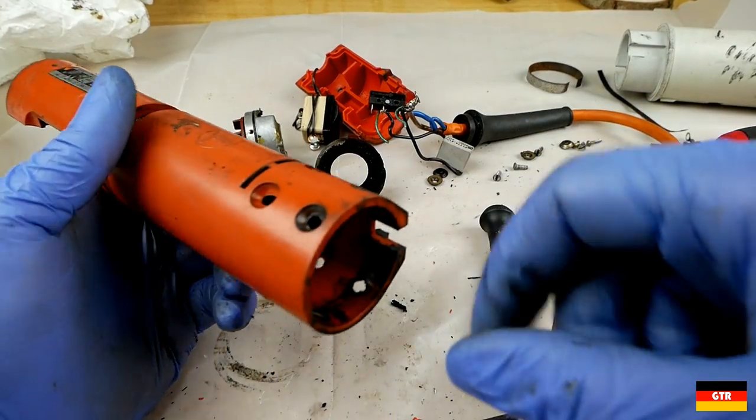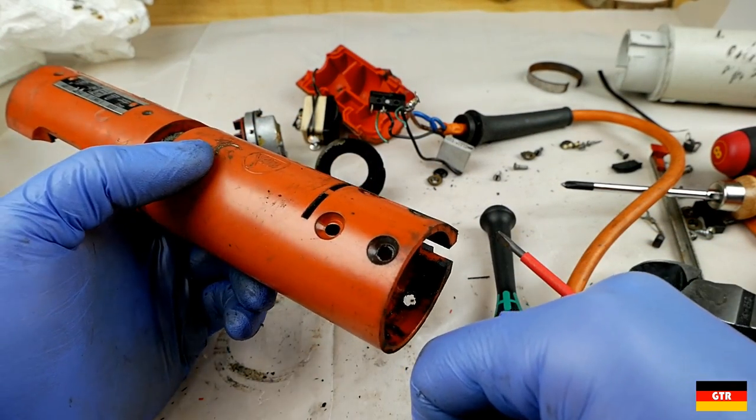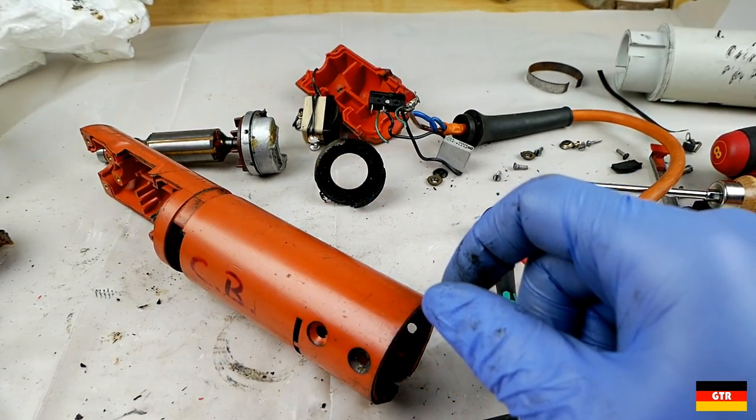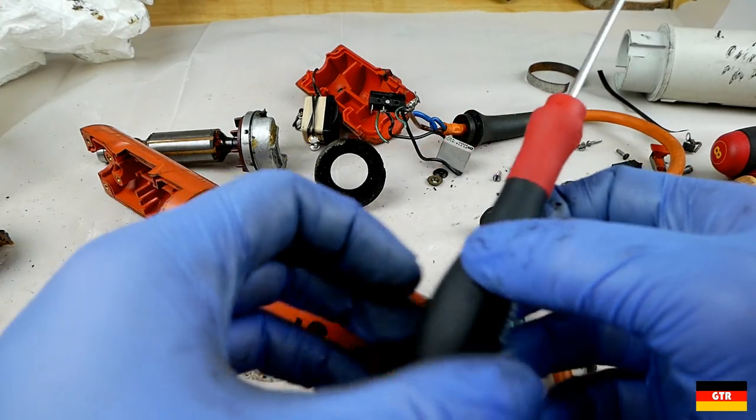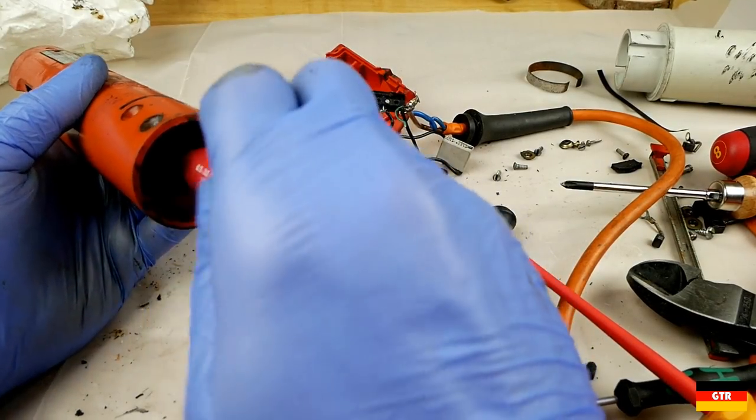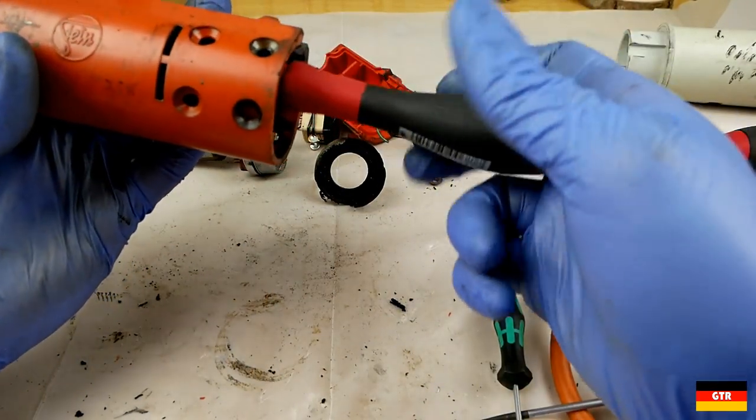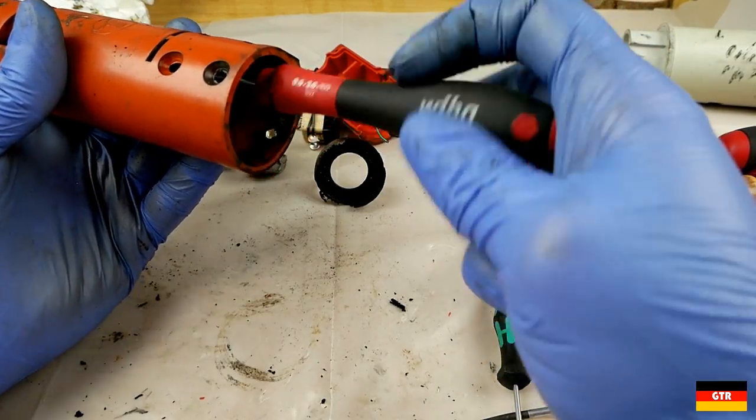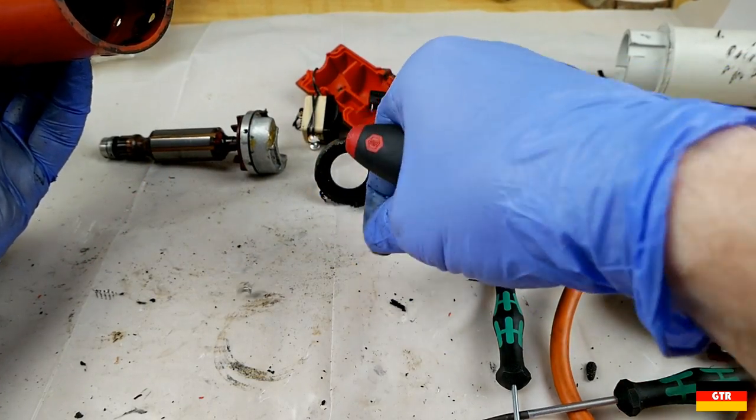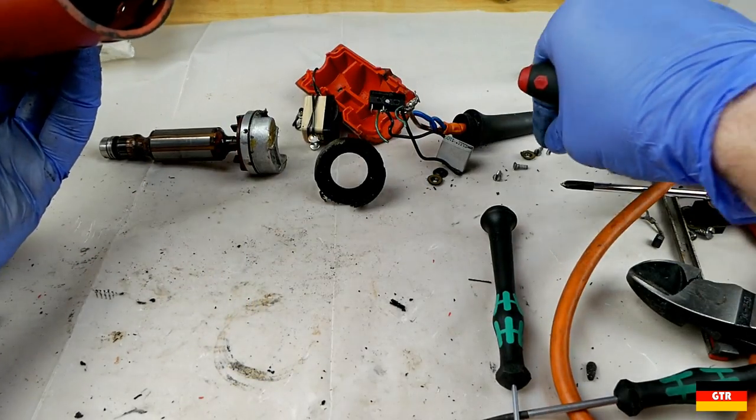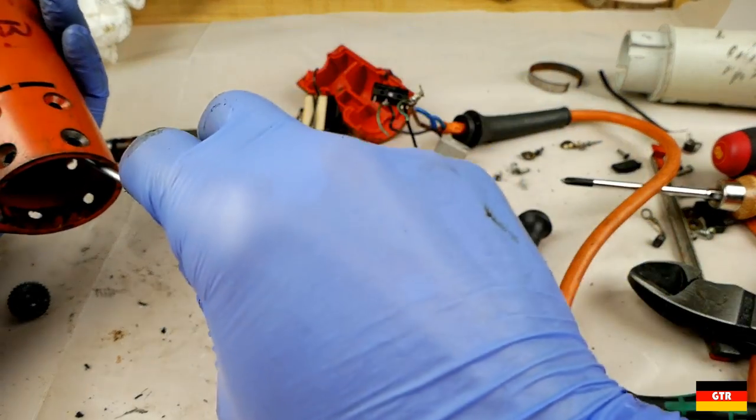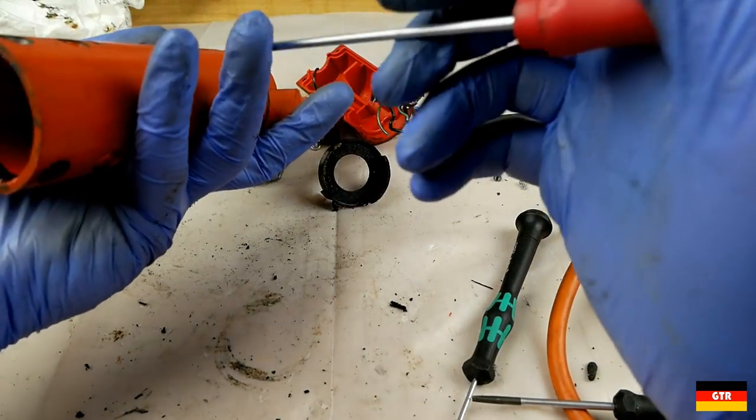I see those two screws. They're way in there. I'm not sure if I have a screwdriver long enough. Let's try this one. Alright, yeah, I can get that one. There's those little, very tiny screws. Still, you still got the field windings in there. Those have to come out first.